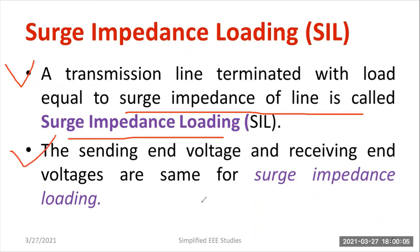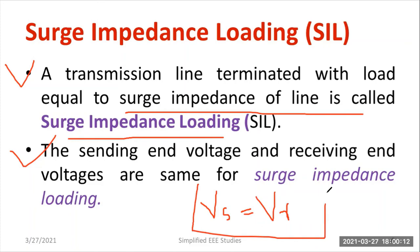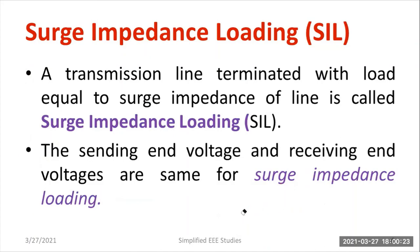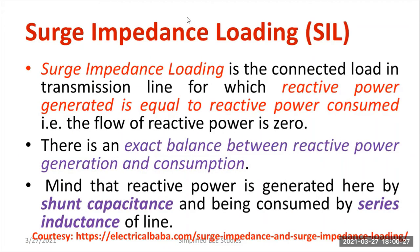In surge impedance loading, the sending-end voltage VS and the receiving-end voltage VR are equal. This is mainly applicable for a lossless transmission line. Surge impedance loading is the connected load in the transmission line for which the reactive power generated by the capacitor equals the reactive power absorbed or consumed by the inductor, so the overall net reactive power flow is zero.